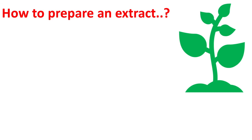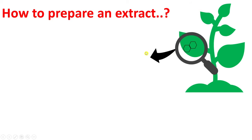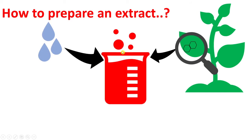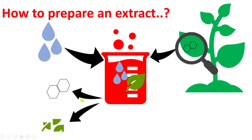How to prepare an extract: whenever we are aiming for the preparation of an extract, we are considering some active chemical constituents. Our aim is to bring these active chemical constituents out of the plant or animal tissue. For that purpose we are going to use certain solvents, and eventually we combine this solvent with the solid object — the plant or animal material — in a certain extraction technique, which gives us the active constituents and leaves behind the extracted or exhausted material.